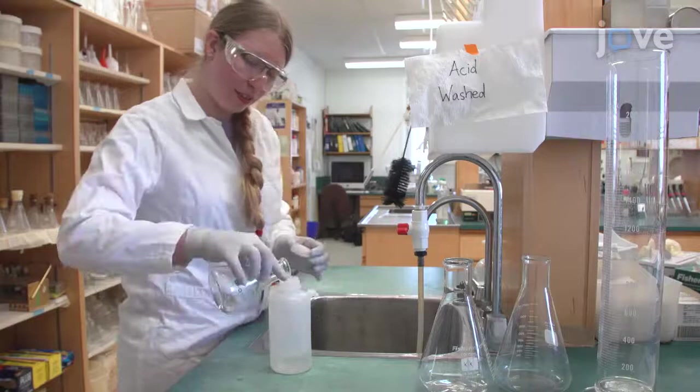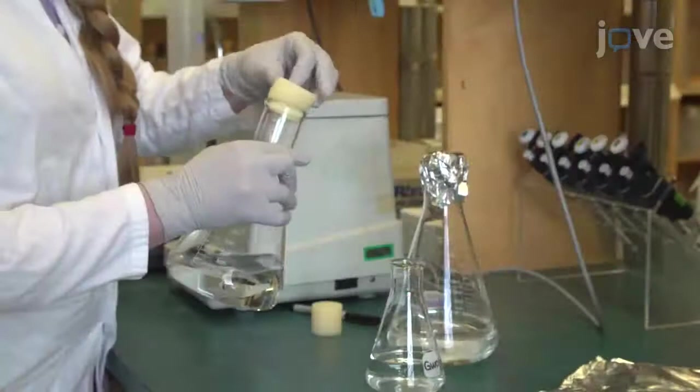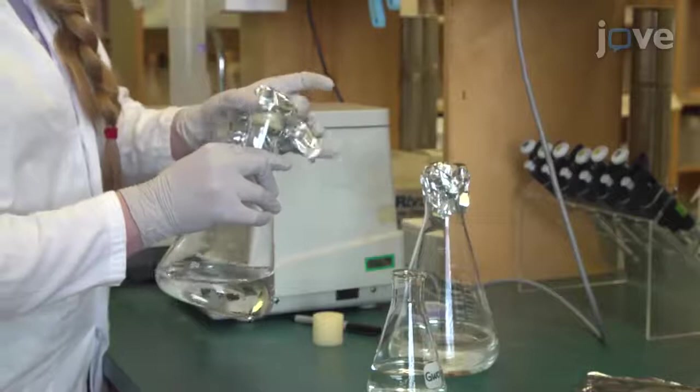Fill the three flasks with the liquid media. Seal the flasks with gas-permeable foam stoppers and cover the necks with aluminum foil. Then label and autoclave the flasks at 121 degrees Celsius and 100 kilopascals for 25 minutes.